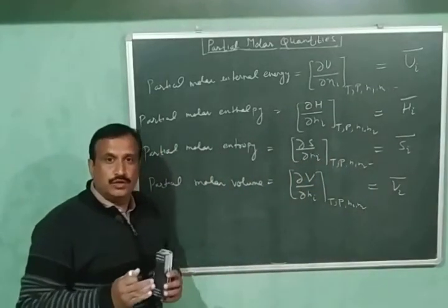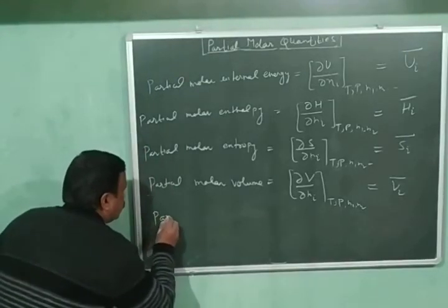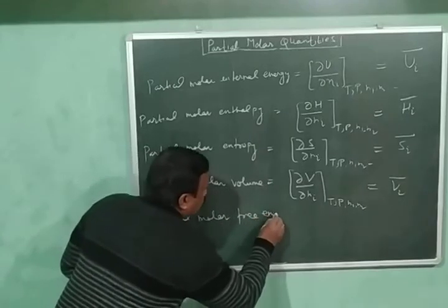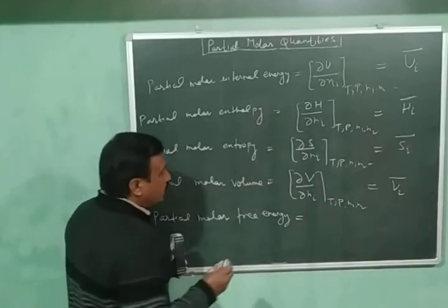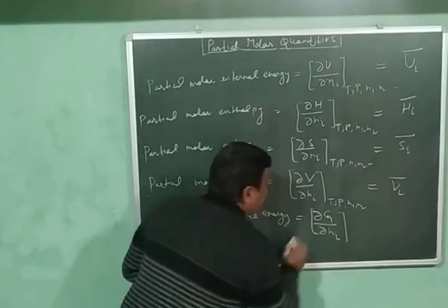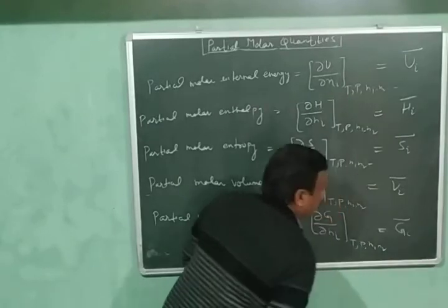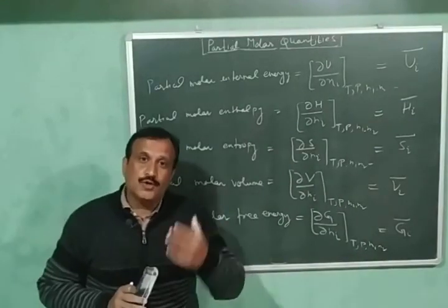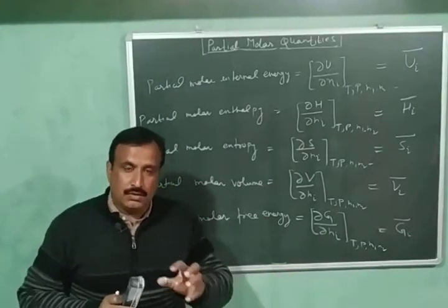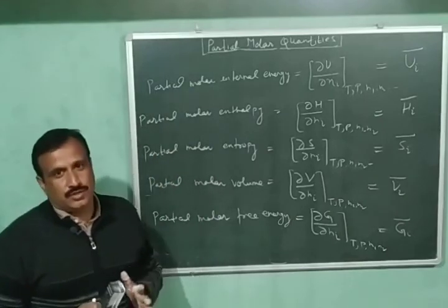A very, very important partial molar quantity is the partial molar free energy of the i-th component: (∂G/∂nᵢ) at constant T, P, and number of moles = Ḡᵢ. This partial molar free energy is also called the chemical potential. In my next video, I will discuss this partial molar free energy or chemical potential in some detail. So keep watching my videos, like and share, and subscribe to my channel. Thank you very much.